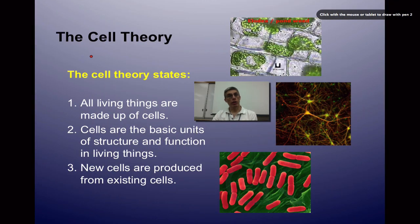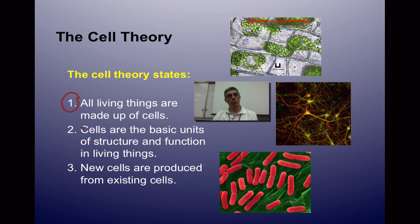Based on observations made by Hooke, Leeuwenhoek, and many scientists from the 1700s to 1800s, we developed the cell theory. The cell theory states three things: first, all living things are made up of cells — whether it's a plant, animal, fungus, or bacteria; second, cells are the basic units of structure and function in all living things; and third, new cells are produced from existing cells, meaning cells do reproduce.